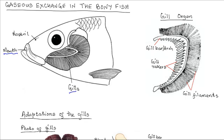Bony fish have eight gills. The gills are the organs used for gases exchange. So bony fish have eight gills, four on each side of the pharynx.